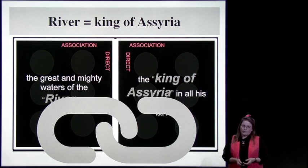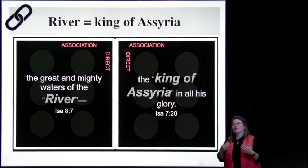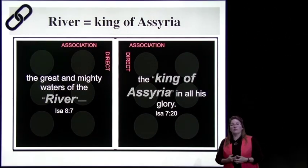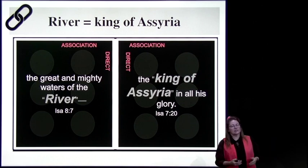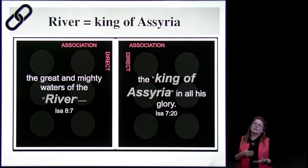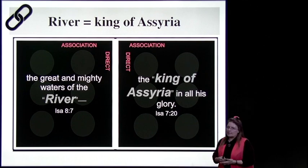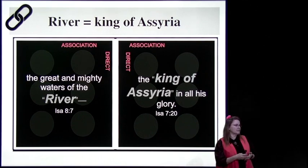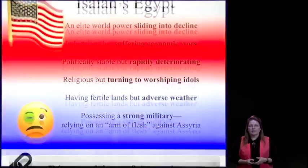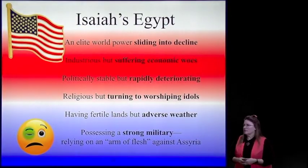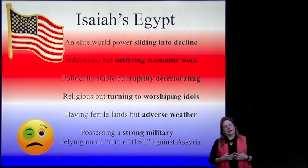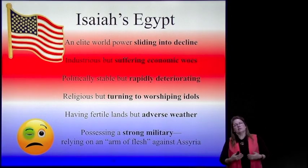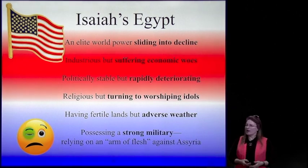He is the river—this is a really important one to nail down because you see it in so many scriptures. He is the great and mighty waters of the river in Isaiah 8, the king of Assyria in all of his glory. So we've linked a few things together—some pseudonyms and metaphors that tell us about the king of Assyria in the end time.